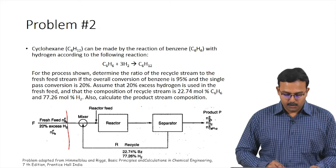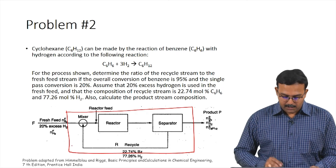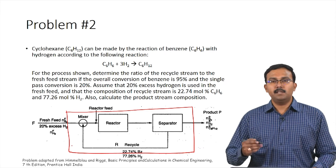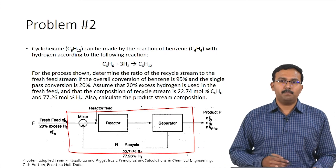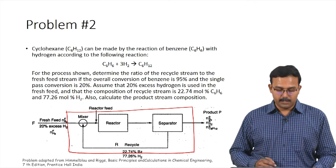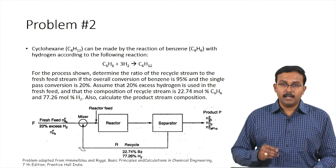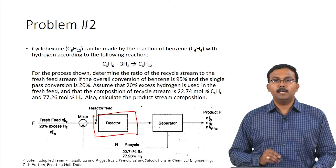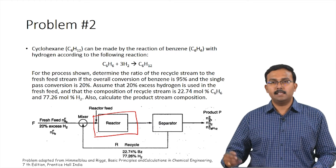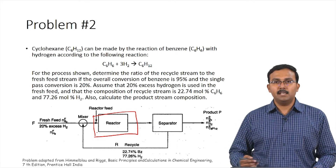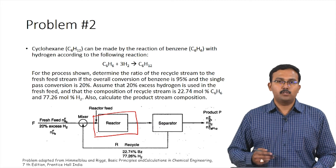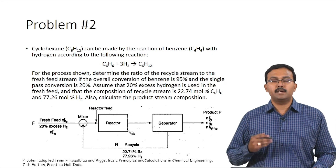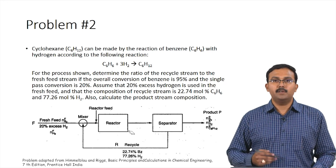Overall conversion is calculated using the overall system: moles of reactant consumed divided by moles supplied to the system. Single pass conversion accounts for only the reactor — the reactant passes through once, giving a once-through conversion. Here, the single pass conversion is 20% and the overall conversion is 95%.